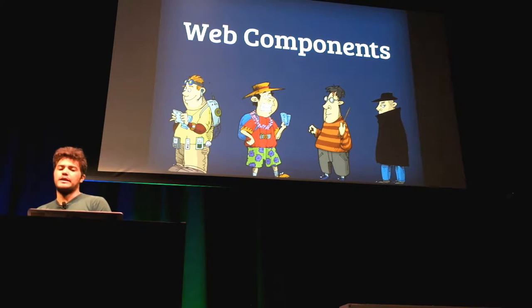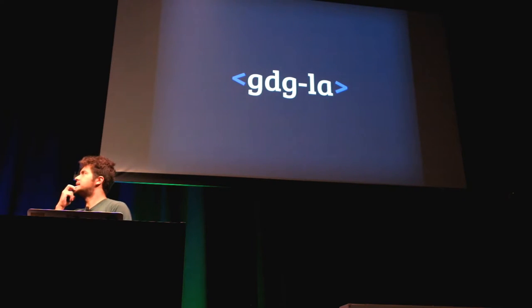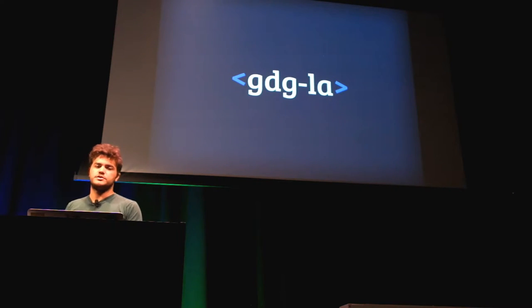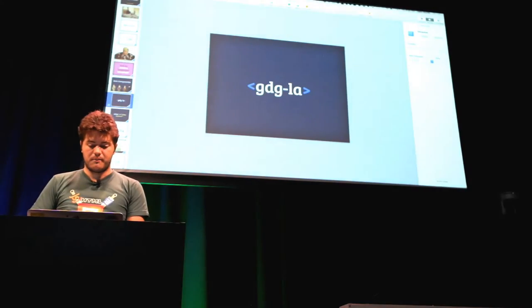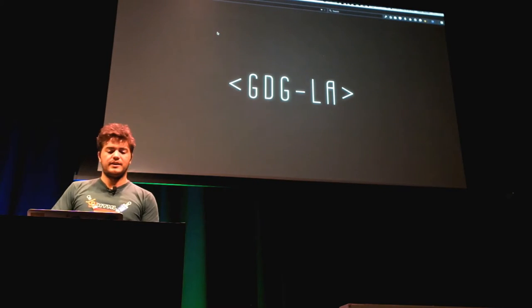That's why Web Components is important. Web Components is a specification from W3C that started with some guys from Google and is getting more and more popular. Basically, one of the main things you can do with Web Components is create your own HTML tags. You have A for links, P for paragraphs, table element — all those HTML elements we're used to. But now we can create our own — I can even create a GDGLA element. And my element will look like this.